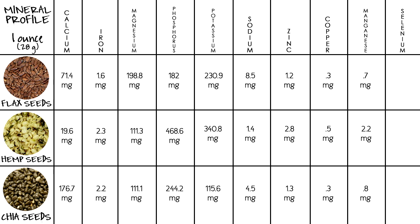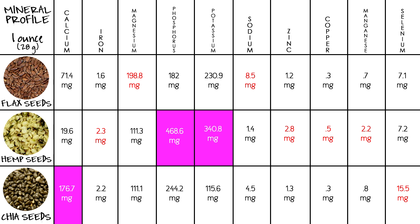For manganese: flax seeds 0.7 mg, hemp seeds 2.2 mg, chia seeds 0.8 mg. For selenium: flax seeds 7.1 mg, hemp seeds 7.2 mg, chia seeds 15.5 mg. I've marked in red each seed with the highest value, and placed a pink highlight on values I consider noteworthy. Chia seeds have 9 times more calcium than hemp seeds and double the amount of flax. Hemp seeds have double the phosphorus of flax and chia, and 3 times more potassium than chia and nearly double that of flax.